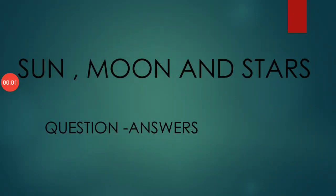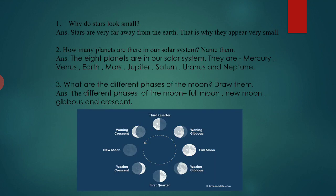Good morning students. Today we will do the question answers of the lesson Sun, Moon and Stars. Question 1: Why do stars look small? Stars are very far away from the Earth, that is why they appear very small.